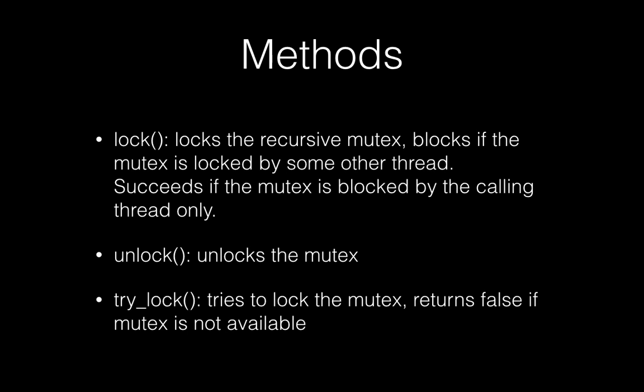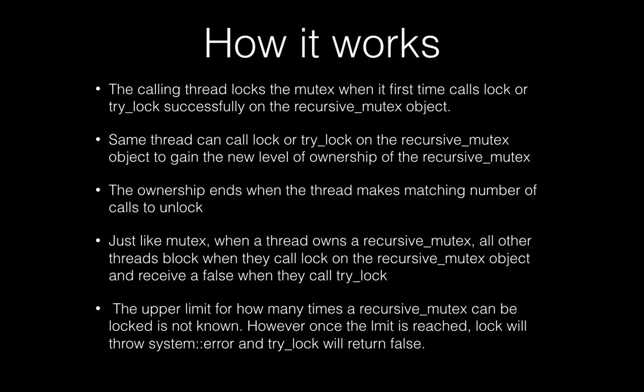The calling thread calls lock or try_lock for the first time to get access to the recursive mutex. The same thread can then call lock or try_lock again to gain a new level of ownership of the recursive mutex. To end ownership, you have to call unlock, and there should be an equal number of calls to lock and unlock.